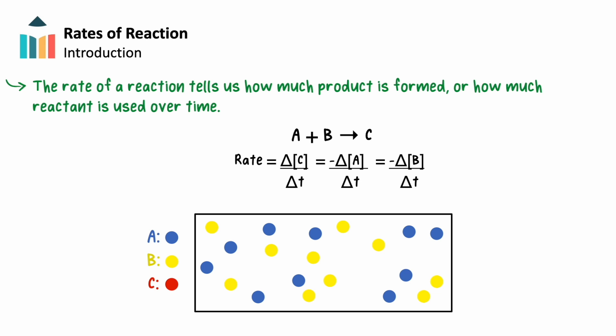To calculate a reaction rate, we need to measure how much the mass or concentration of a reactant or product changes over time. In most cases, the change in concentration is measured and divided by the time taken for this change to occur.